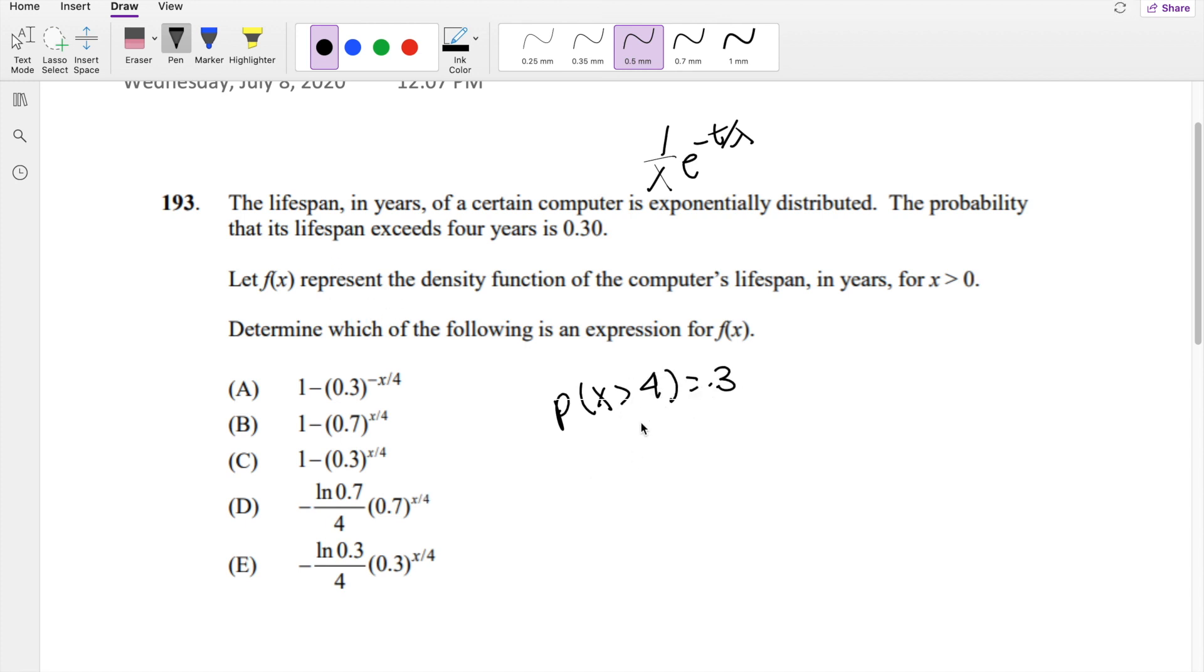And we're just trying to find f of x. So if we know that X is greater than 4, then we know this is also equal to 1 minus the probability that X is less than or equal to 4. And we know this is easy to find because we know the CDF of an exponential function, given X is less than a, is equal to 1 minus e to the negative a over lambda.